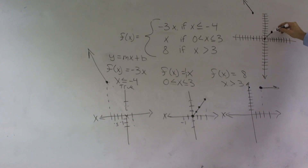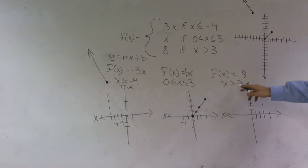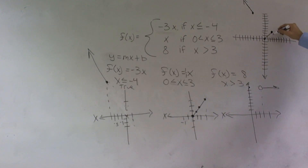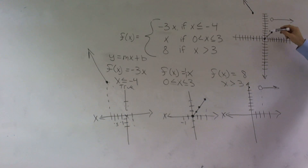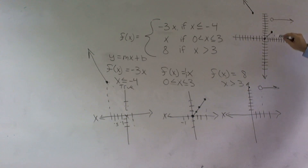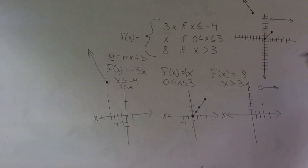This piece starts from three, and this is an open dot because it says x is greater than three — not greater than or equal to. Whenever it's greater than without equal to, it's going to be an open dot. This function goes up to eight. If these were two closed dots, that would mean two points on the same x value, so it wouldn't be a function. That's why one of them has to be an open dot — because it says x is greater than three. So that is your piecewise function for that equation.